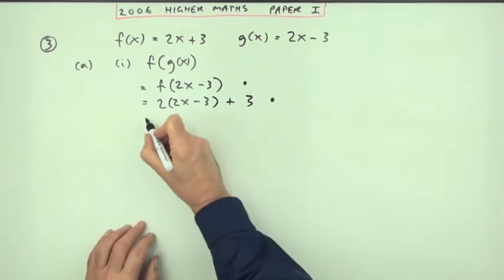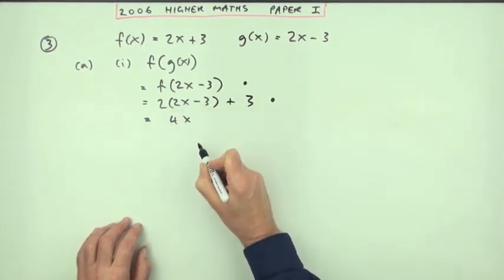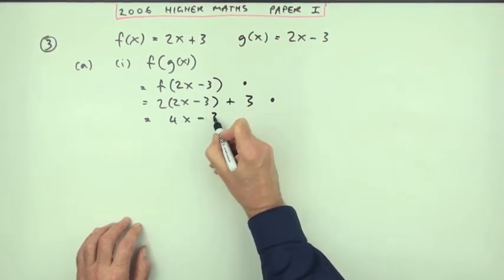But no doubt you hopefully wouldn't be satisfied with that and you would then say, well that's 4x minus 6 plus a 3, so 4x minus 3.